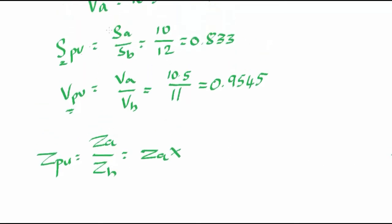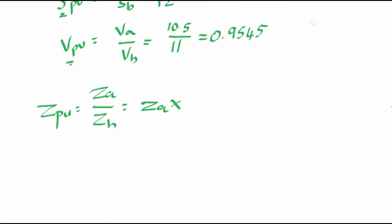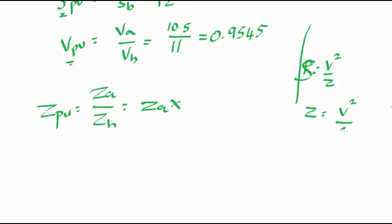We know Z_base can be found from per unit values of S and V. From electrical circuits we know power P = V²/R, and for AC circuits with impedance, S = V²/Z, so Z = V²/S. Therefore Z_base = V_base² / S_base, and Z per unit = Z_actual × (S_base / V_base²). This is the most important formula in the complete power systems.